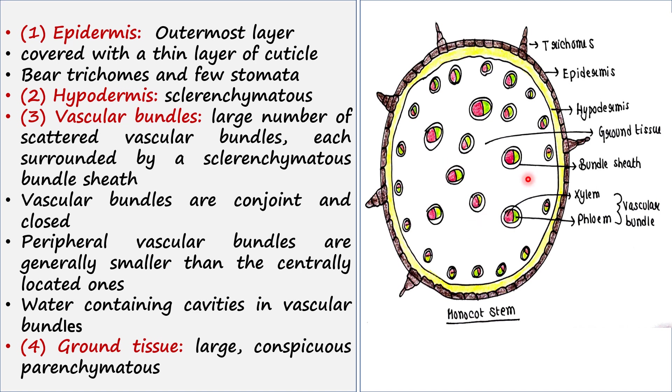Apart from these vascular bundles, you will get ground tissue. All the cells found in between these vascular bundles are called ground tissue. Ground tissue is actually very large and conspicuous tissue. Conspicuous means this is very much distinct, and this ground tissue contains parenchyma cells.